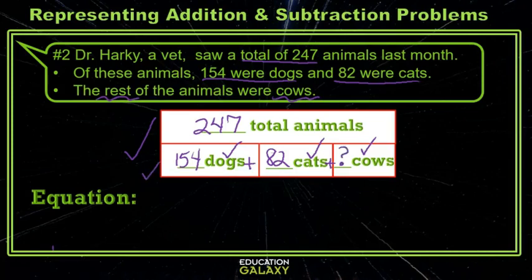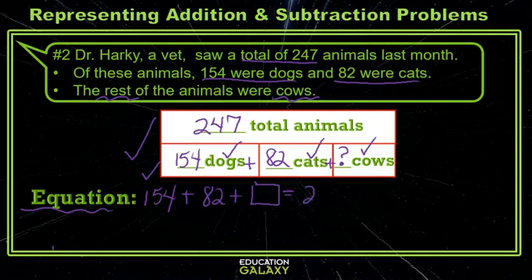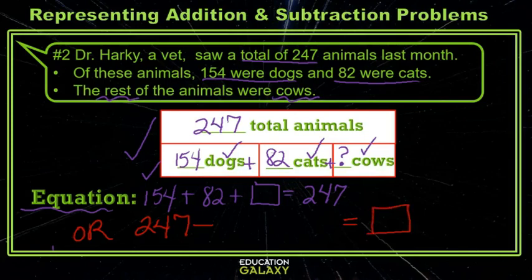If you understand the strip diagram, the equation is easy. The simplest equation is: the number of dogs, which is 154, plus the number of cats, which is 82, plus the number of cows (I'll put a box since I don't know that) equals 247. Another equation we could do is to take the total, subtract the parts that we know — and since we know two parts, we have to subtract both of them — and this will equal the part we're looking for.